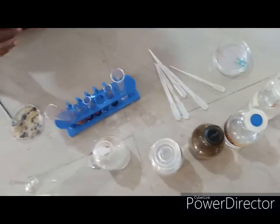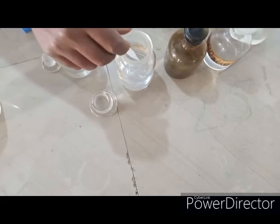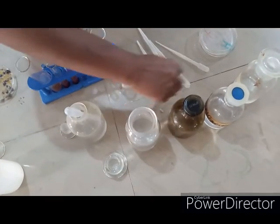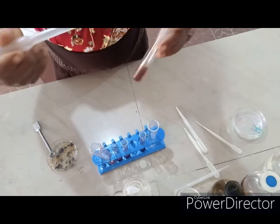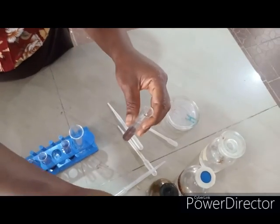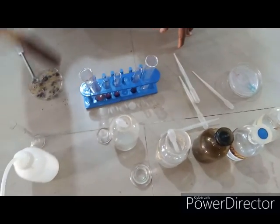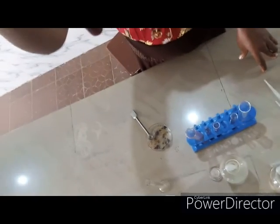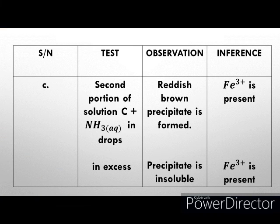To the second portion of the solution, we are going to add aqueous ammonia in drops and then in excess using your dropping pipettes. The same way, we observe a reddish brown gelatinous precipitate. Add aqueous ammonia in excess — the precipitate is insoluble. As you can see, the reddish brown solid remains in the solution. So iron 3 plus has been confirmed.